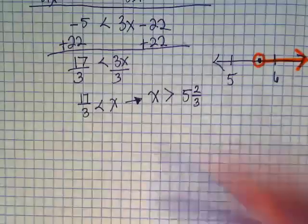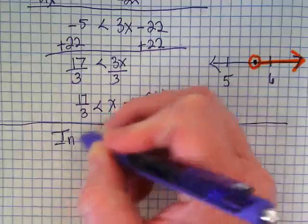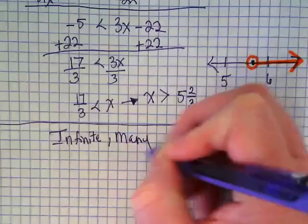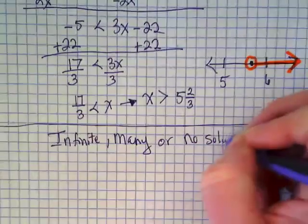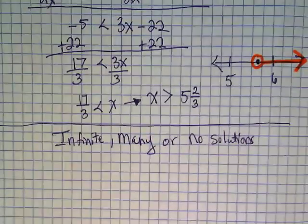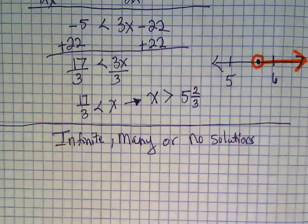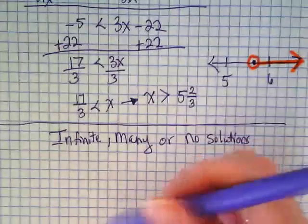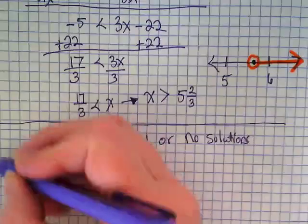There are also inequalities with infinite, many, or no solutions. Equations have one answer. Inequalities have many answers. That's why when we highlight the number line, we're saying everything in this direction would make this inequality true. Wait, how do you get an infinite? Let's find out.